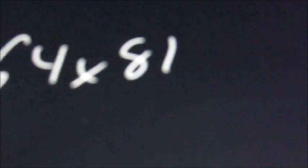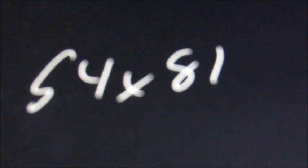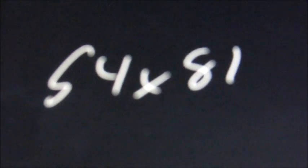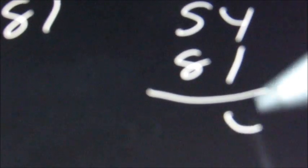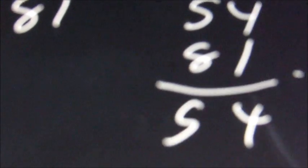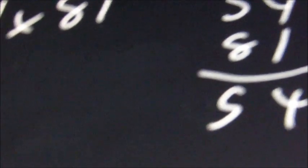First let's do one that has two digits in each. So 54 times 81. It doesn't matter what order you put these in. So I'm just going to put 54 times 81. First you're going to multiply the ones. 1 times 4 is 4. 1 times 5 is 5. Then for the tens place, you're going to have a placeholder, which is a 0.